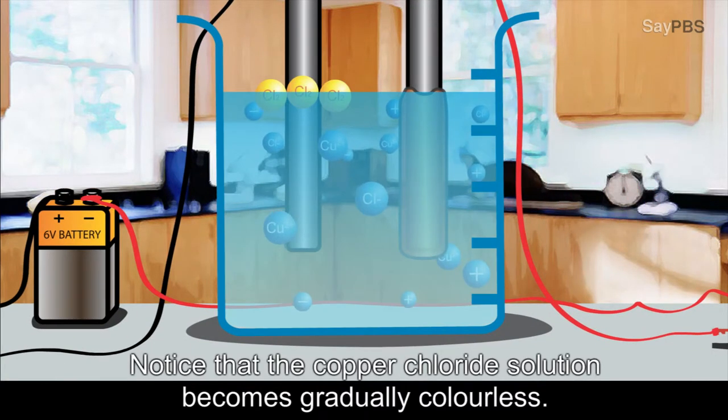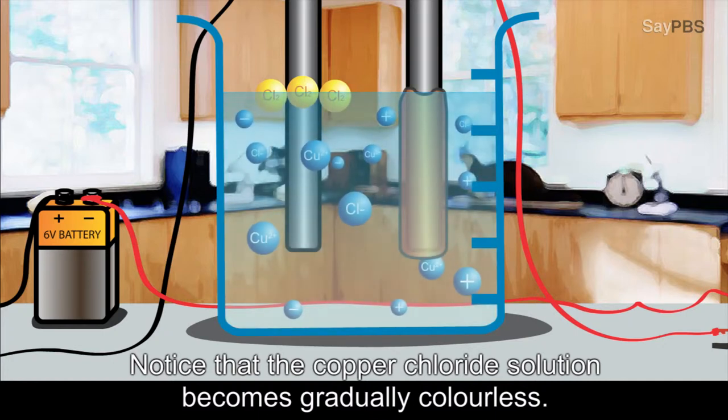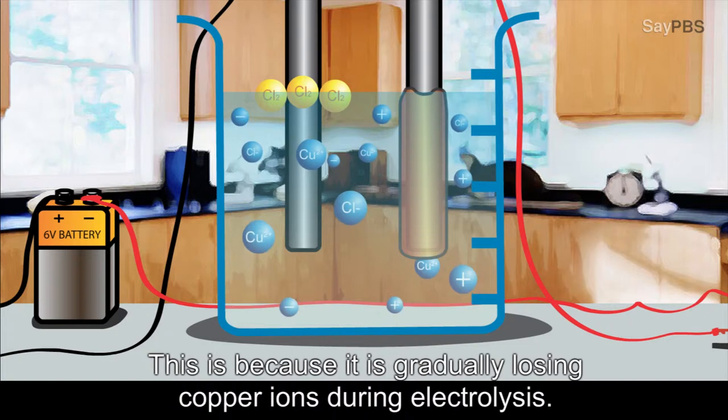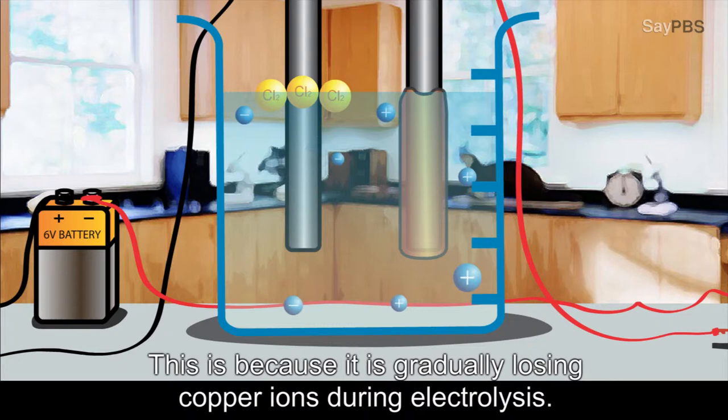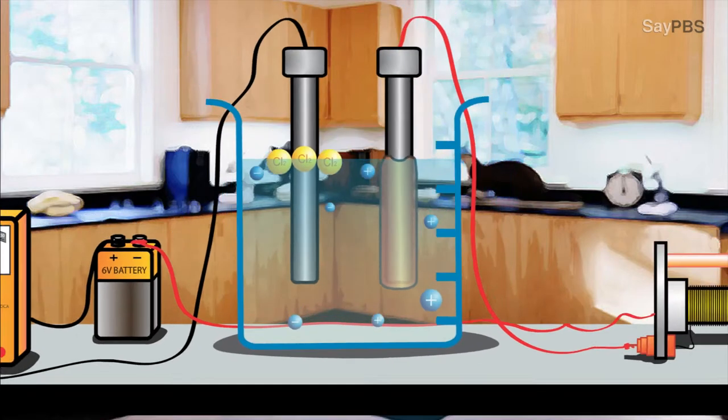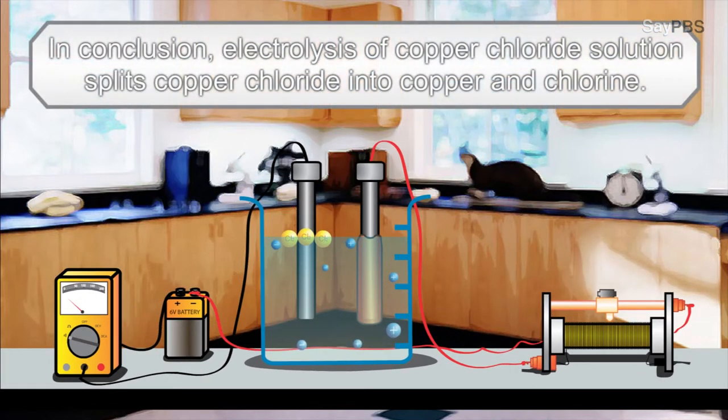Notice that the copper chloride solution becomes gradually colorless. This is because it is gradually losing copper ions during electrolysis. In conclusion, electrolysis of copper chloride solution splits copper chloride into copper and chlorine.